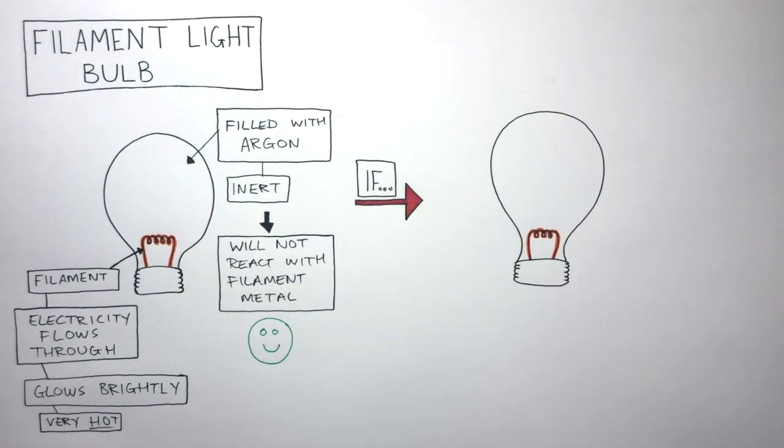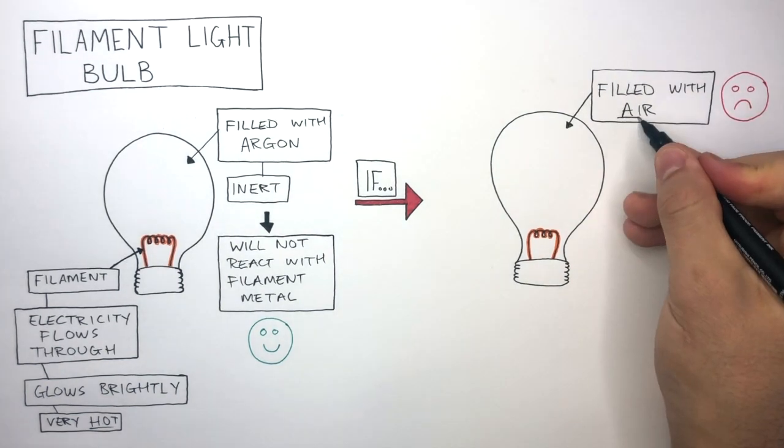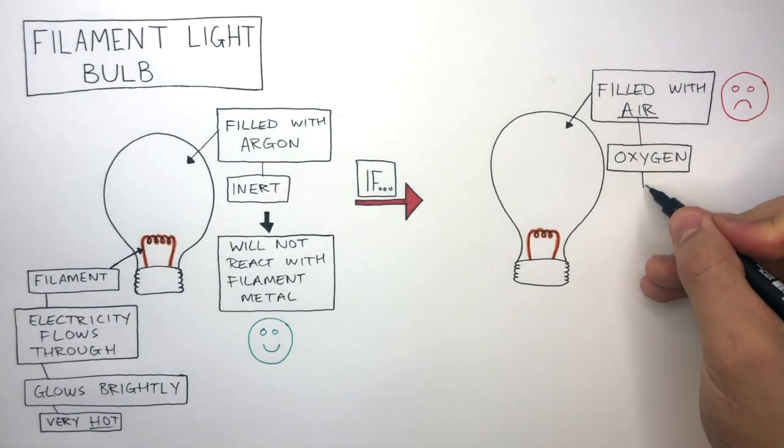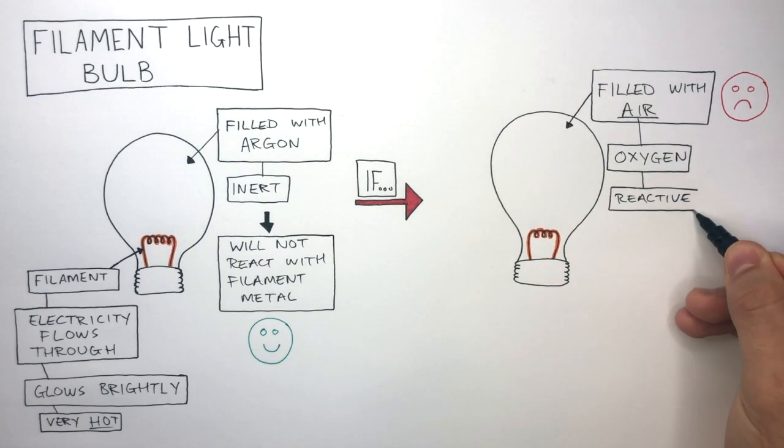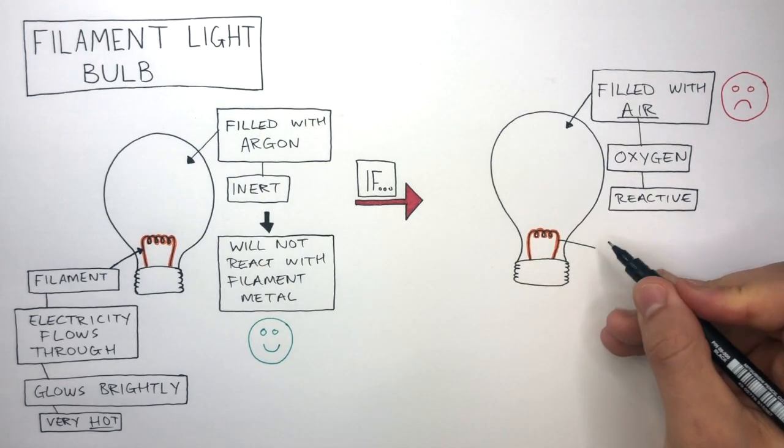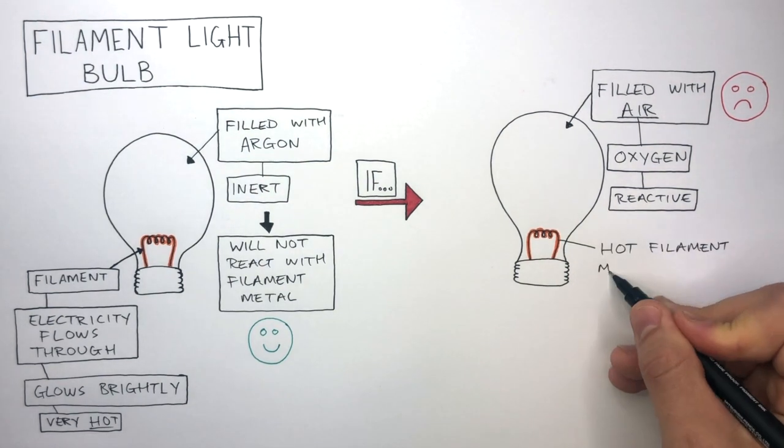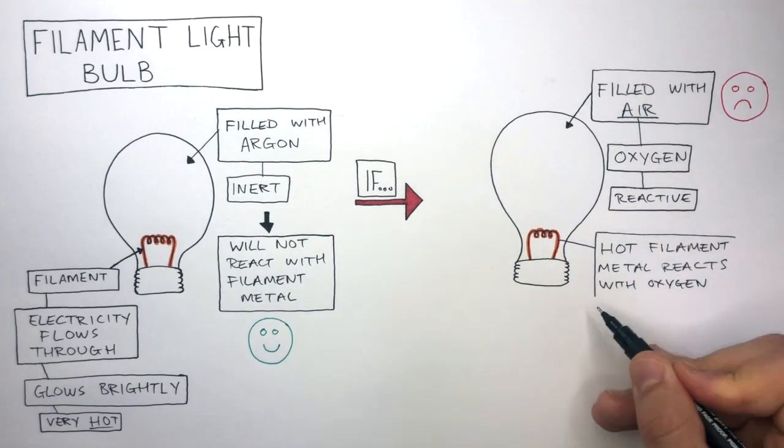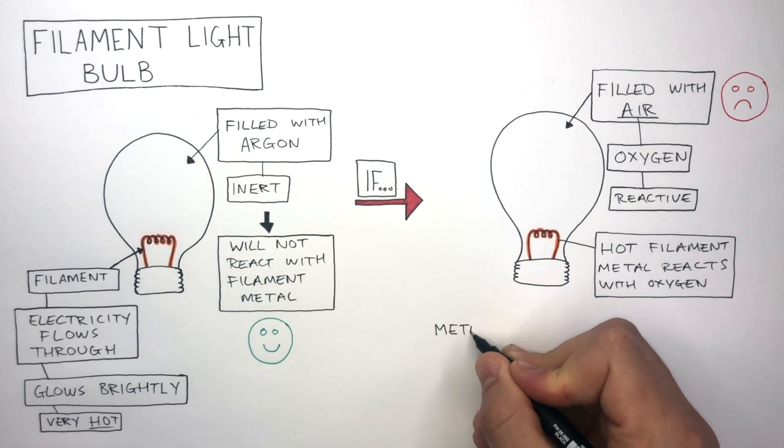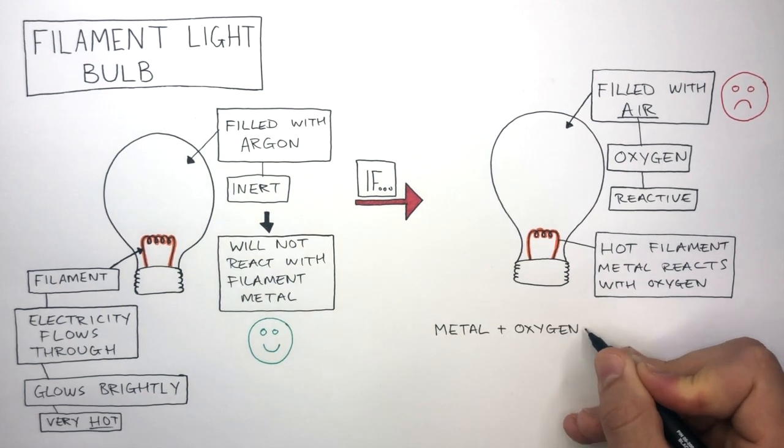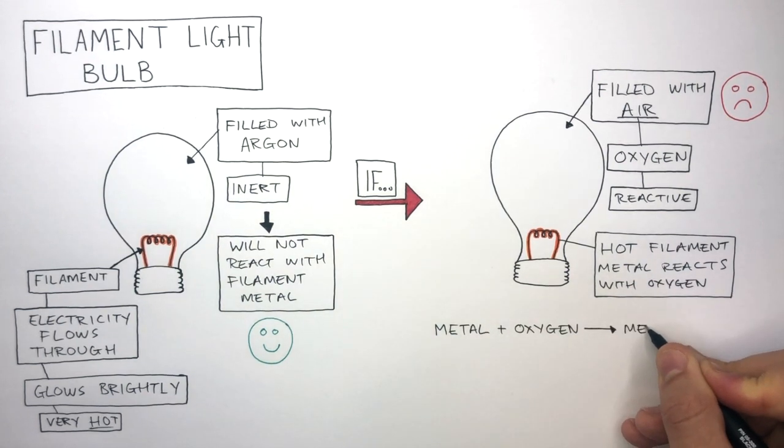So if we had the same filament bulb, but it was filled with air, this would be a bad thing. Air contains oxygen, and oxygen is reactive. It is not inert like argon or the other noble gases. Well, what would happen is the hot filament metal reacts with the oxygen. We can summarize this in an equation where metal plus oxygen reacts to form a metal oxide.